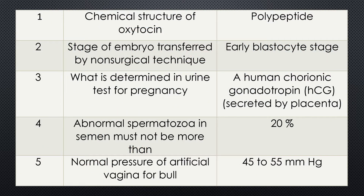Question 1. Chemical structure of oxytocin. Here the detailed chemical structure is not asked, but the simple structure. The answer is polypeptide.